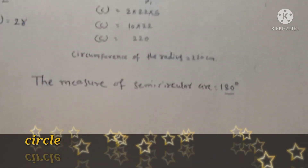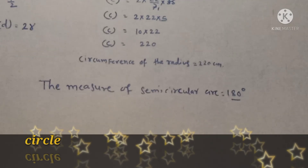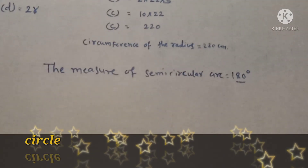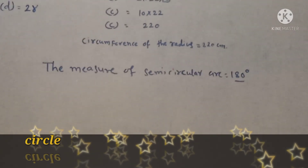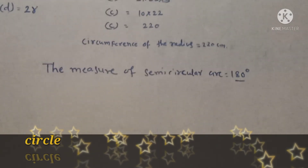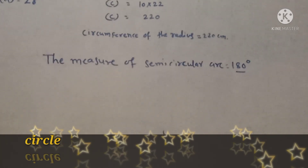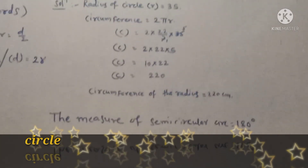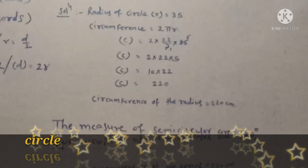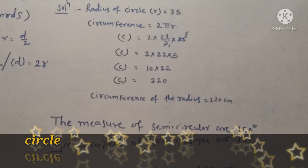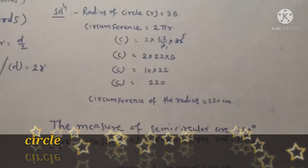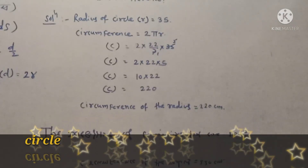The measure of a semi-circular arc is equal to 180 degrees. The measure of a semi-circular arc is 180 degrees.